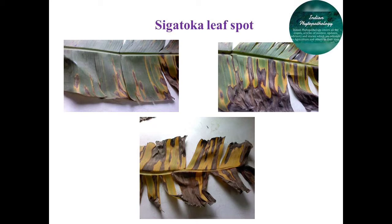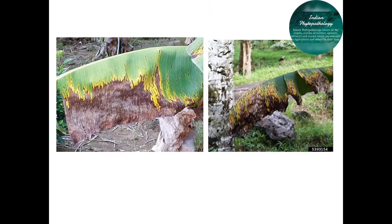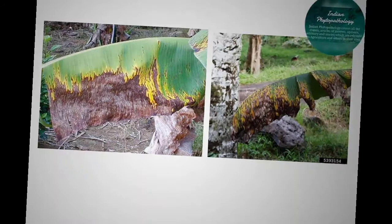The central portion becomes necrotic and gray, surrounded by a dark brown band with yellow margins — this is the particular mark of identification for Sigatoka disease. On the upper surface of spots, fructification of the fungus appears as black specks. These small spots come together to form coalescences and large irregular patches, causing rapid wilting, drying, and defoliation of leaves.